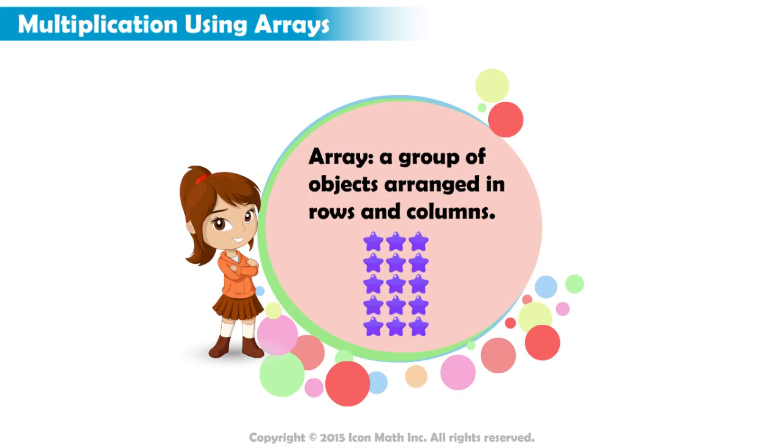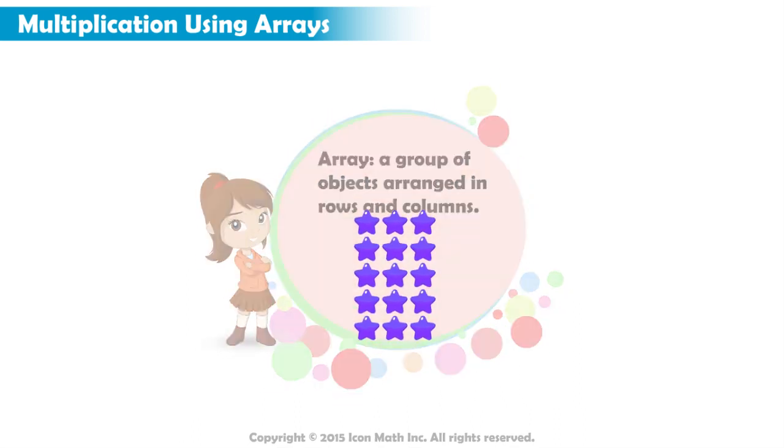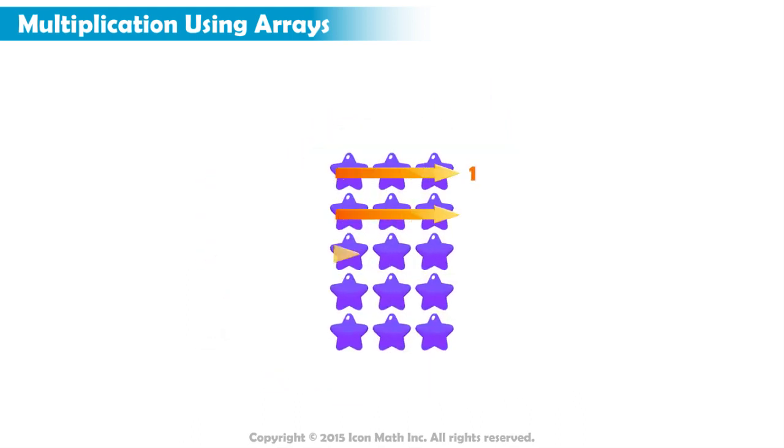And to find the number of objects in an array, we can use repeated addition. This array has five rows and three columns.